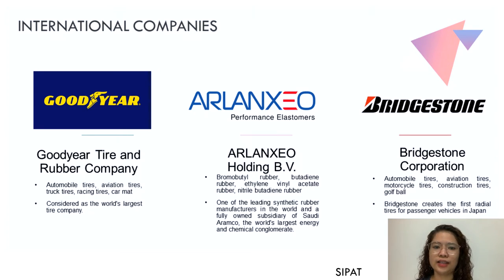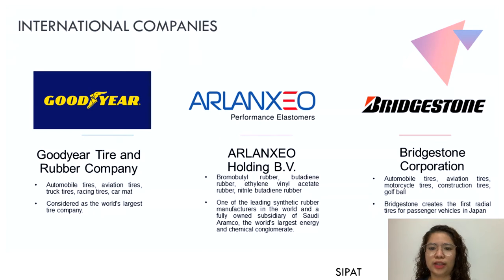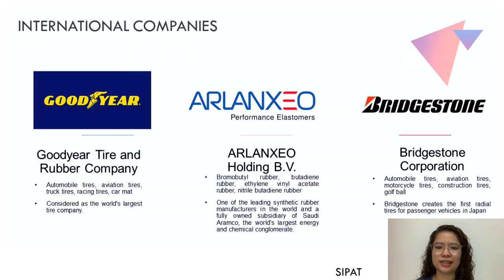Next is Arlanxeo Holding B.V., widely regarded as one of the world's top synthetic rubber producers and a subsidiary of Saudi Aramco, the world's biggest energy and chemical conglomerate. They are involved in the development, production, and marketing of high-performance rubbers for a variety of applications. They currently have 20 manufacturing facilities in nine nations across four continents: Europe, North and South America, and Asia. Their most well-known products include bromobutyl rubber, butadiene rubber, ethylene vinyl acetate rubber, and nitrile butadiene rubber.